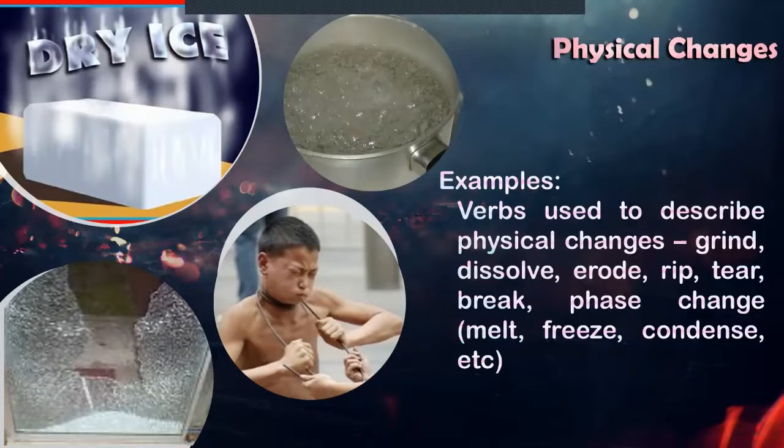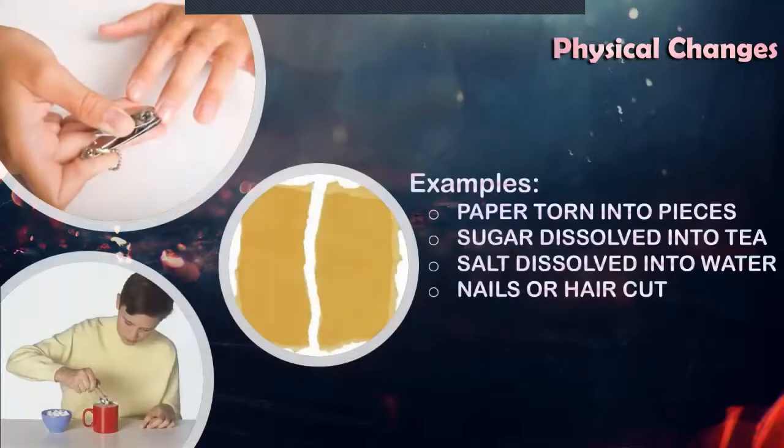Example of phase changes: melt, freeze, condense. Examples under physical changes: paper torn into pieces, sugar dissolved into tea, salt dissolved into water, nails or hair cut. Though there's changes in their form or in their size, but the chemical composition is the same.